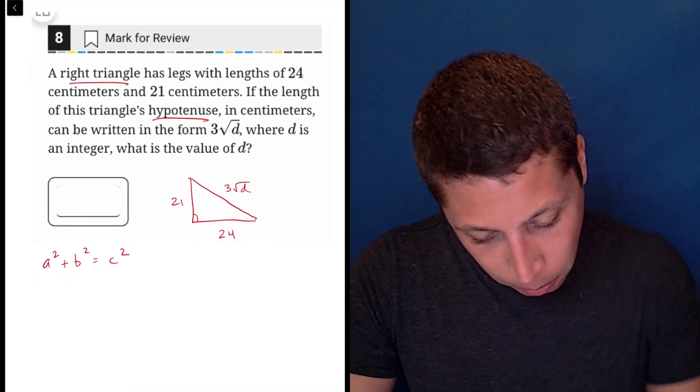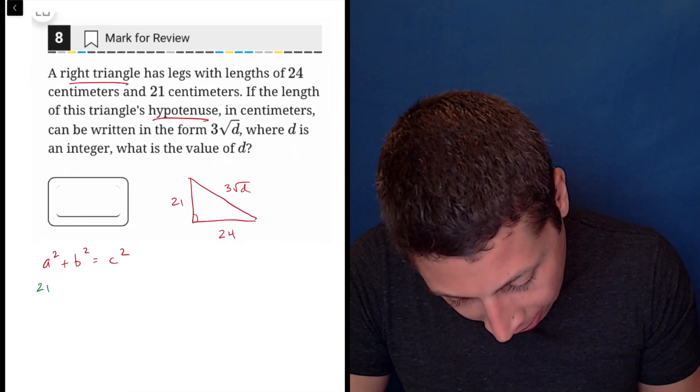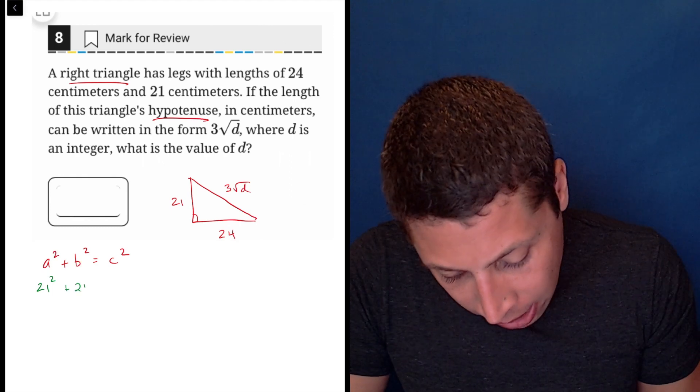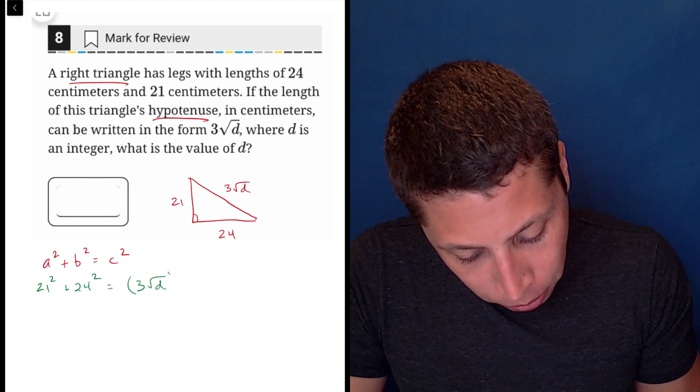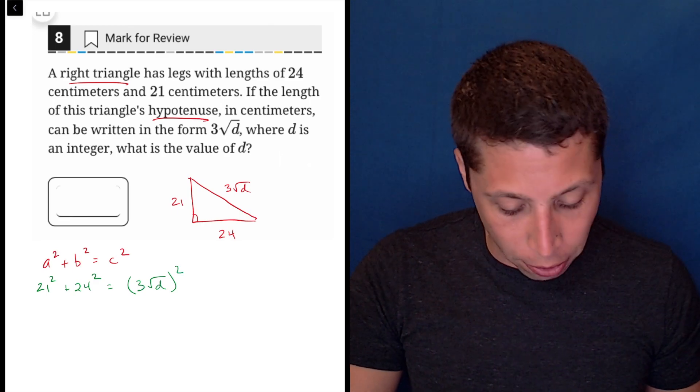Anyway, let's put things where they're supposed to go. So 21, that is our value of A. 24 is our value of B. I'm going to use some parentheses here, but 3 square root d is our value of C, our hypotenuse.